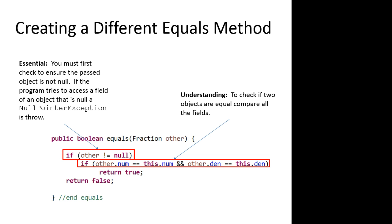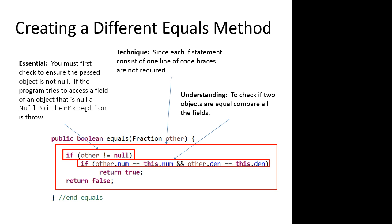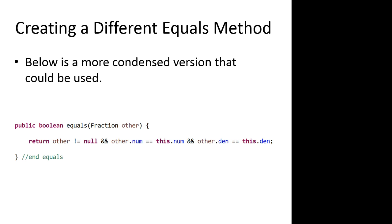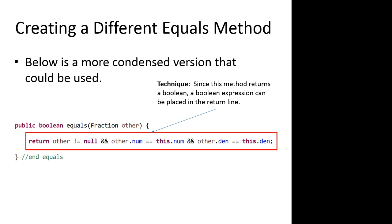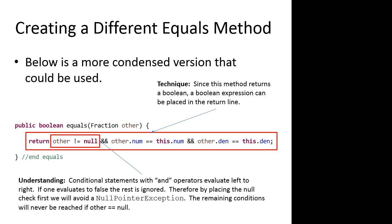To check if two objects are equal, we compare all the fields — though of course you might redefine how equal objects are evaluated. Notice our conditional statements have no braces, because each if statement contains only one other line. Since this method returns a boolean, we can write a boolean expression directly in the return line for a more efficient, condensed version. It's important to put 'other != null' as the first condition. When we have a string of AND conditions, if the first condition fails, the rest aren't evaluated — so null is checked before the conditions that would cause a null pointer exception.